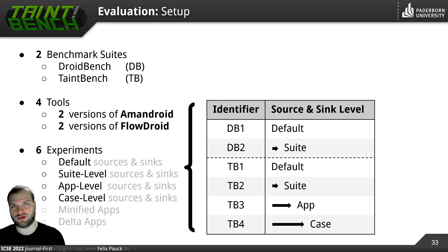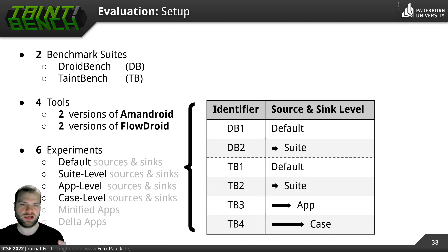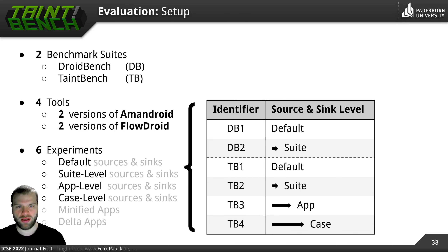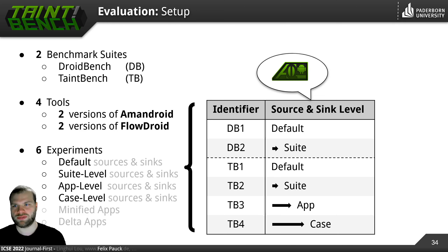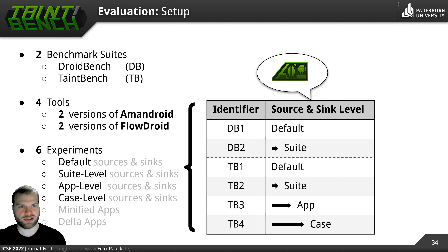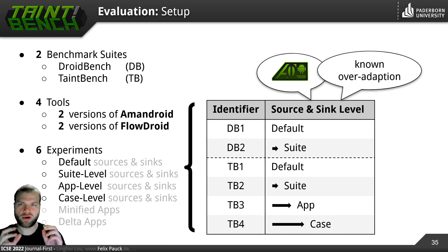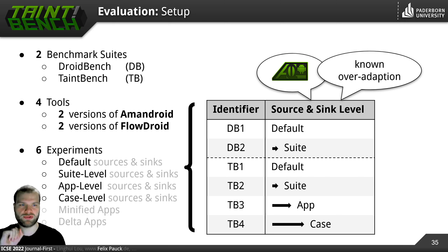For TB3 we made this even more accurate by using only sources and sinks that appear in the respective app currently being analyzed. And at maximum, TB4, we did this with respect to the benchmark case. To execute these experiments we used the AQL — the Android App Analysis Query Language. For each of these different levels of source and sink lists, we could formulate a different query and run the benchmark for each level. We know this is an over-adaptation that you probably cannot make in reality, but it fulfills our purpose here.